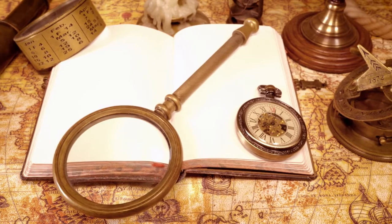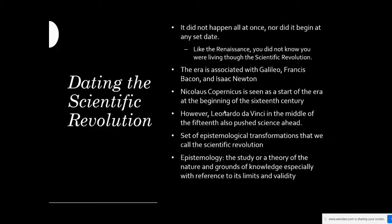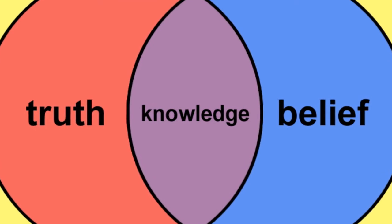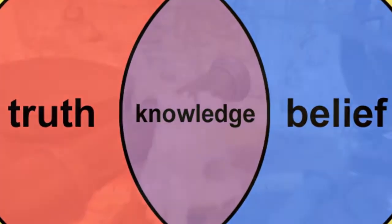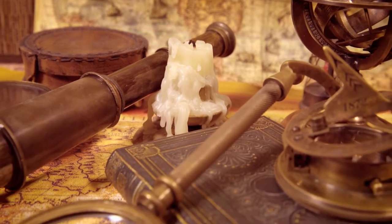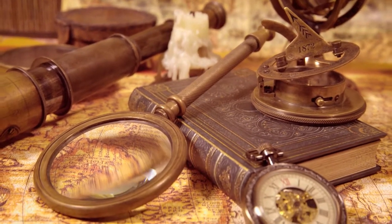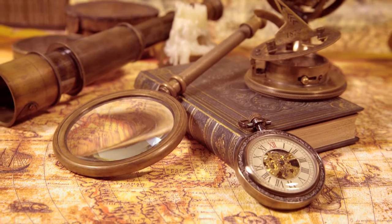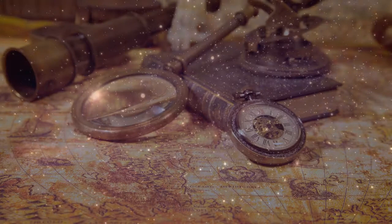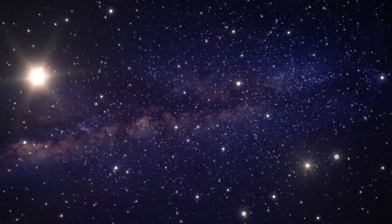Something else to consider as we look at the scientific revolution is epistemology. What is epistemology? It's the study or theory of the nature and grounds of knowledge, especially with reference to its limits and validity. As we go through all of the information over this PowerPoint, we are going to be seeing some transformations as we look at the study and theories of nature.